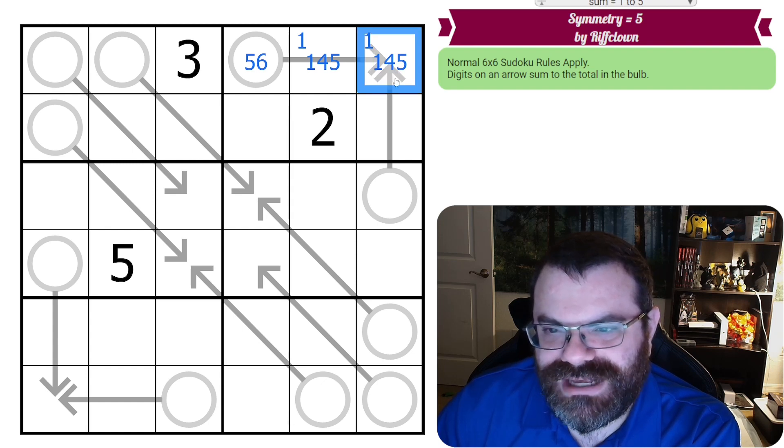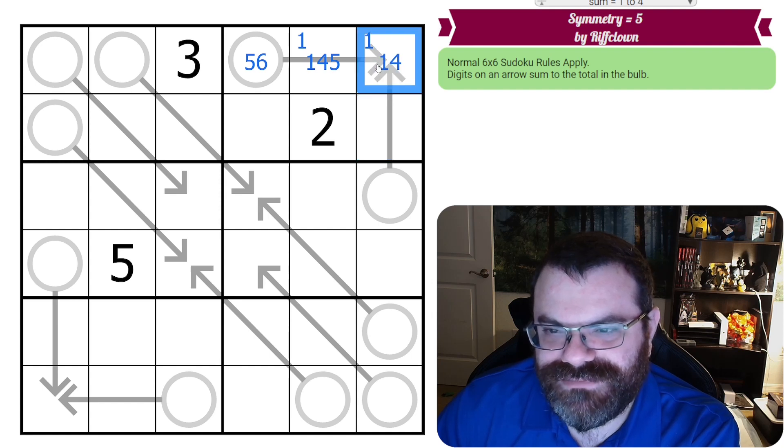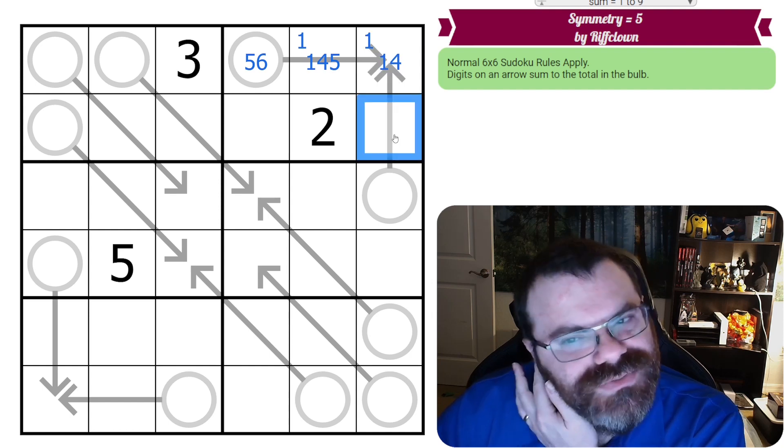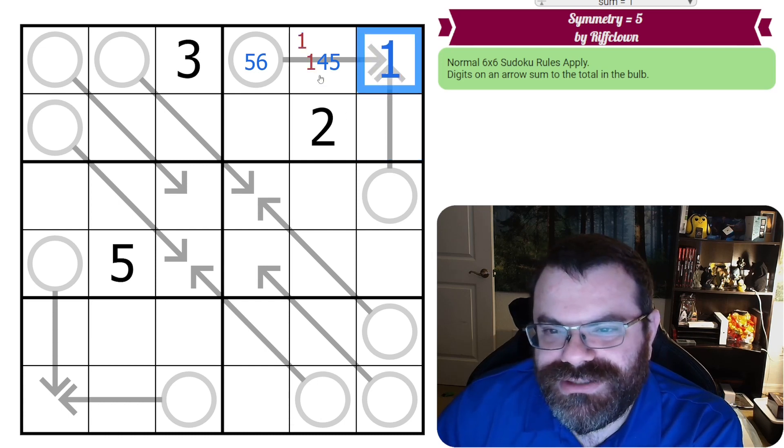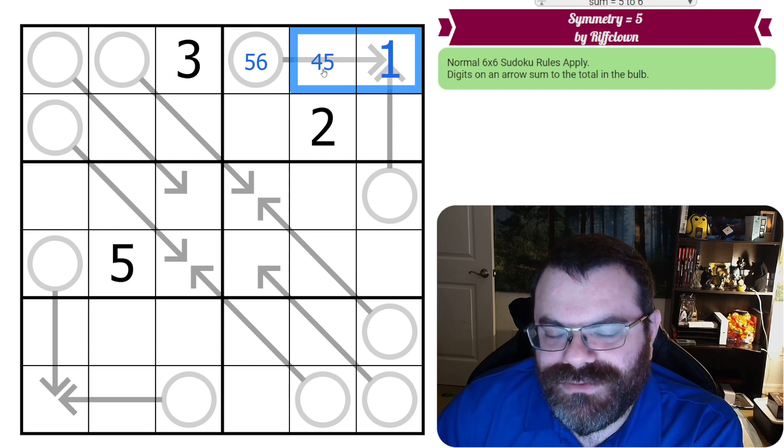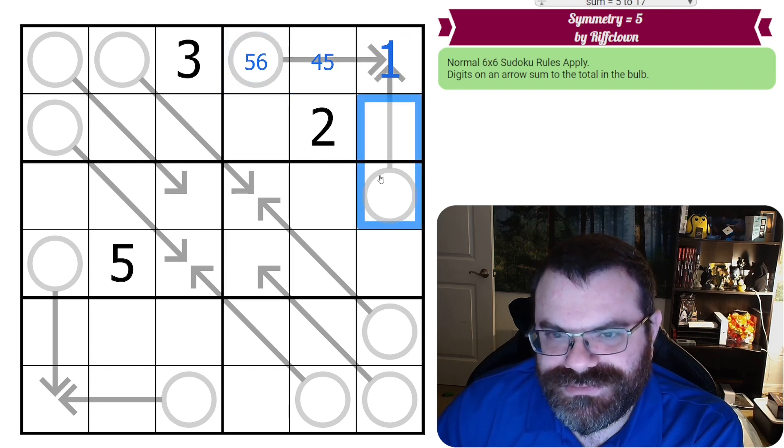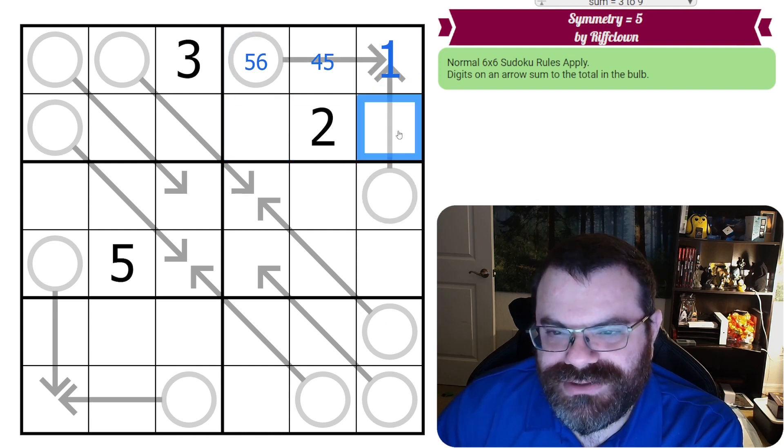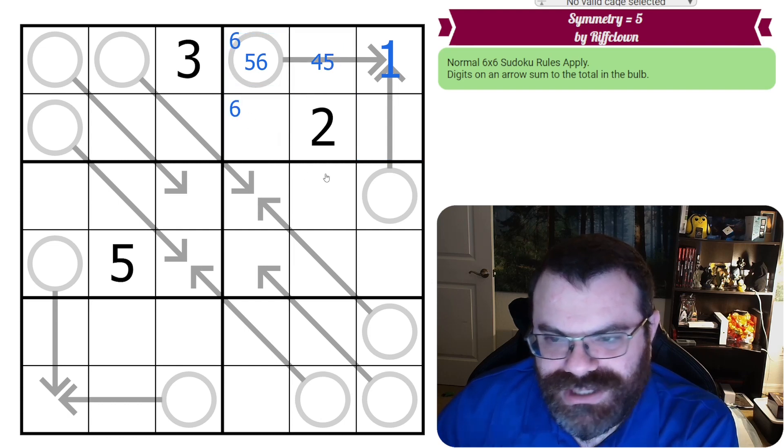But if this was a 5, then this would also have to be a 1 and it can't be. So that's not a 5. If this was a 4, then this would have to be a 1 or a 2, but it can't be. So this is the 1, then. And it's adding with 4 or 5 to get to 5 or 6. And then these are also consecutive. So 6 in this box can't go here or here. So 6 is in one of these two.